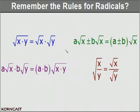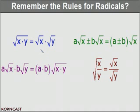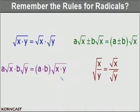The two rules on the left are two different forms of the product property. If we take the square root of a product, we can rewrite that as the product of two square roots. These rules can also go in the other direction — when multiplying two square roots, multiply the terms in front of the square roots as well as the terms within the square roots.